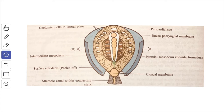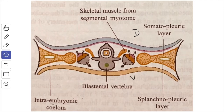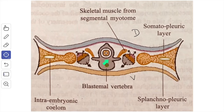The cranial-most four or five pairs of somites are known as the occipital somites, which are situated by the side of the hindbrain and help in the formation of the skull. The somites are differentiated into a ventromedial part called the sclerotome and a dorsolateral part called the dermomyotome. The cells of the sclerotome lose their epithelial character, become polymorphous, and migrate ventromedially around the notochord and the neural tube to form the primitive or blastemal vertebrae. The dermomyotome consists of a lateral dermal plate and a medial muscle plate.